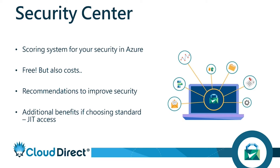What you can do is set a time period — for example, Bob can have access to the virtual machine for two hours, and no longer than that. After that period, the NSG rule disappears and access is blocked again. You can also configure approval gates to control who should be approving access to which virtual machine.